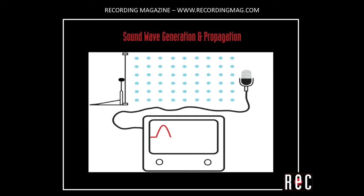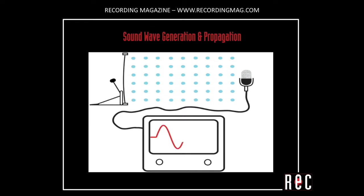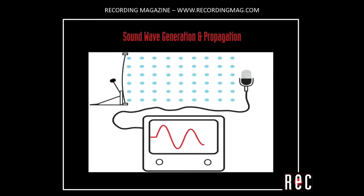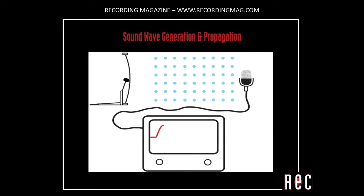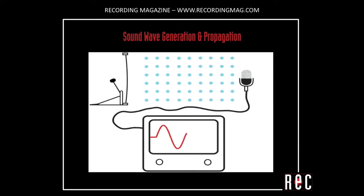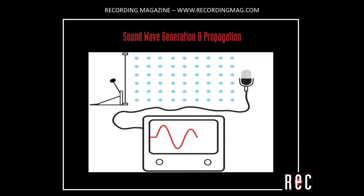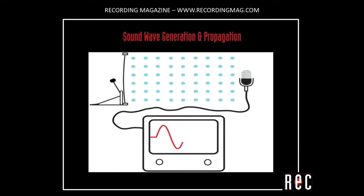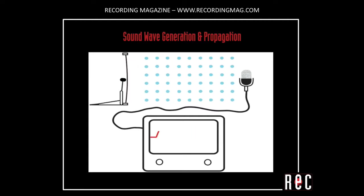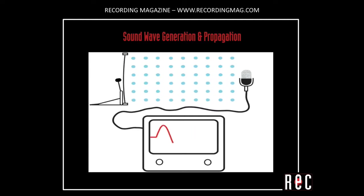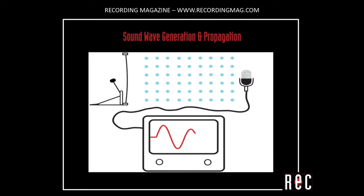These pressure variations then move outwards from the sound source in wave-like motion. The microphone, sensing pressure changes as diaphragm movement, converts this energy into electricity. When connected to an oscilloscope or recorded by a digital audio workstation, the microphone's analogous changes in electrical voltage can be viewed as a waveform. In this example, a simple sine wave is derived from the drum head oscillations.